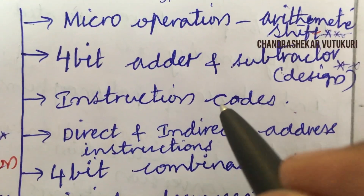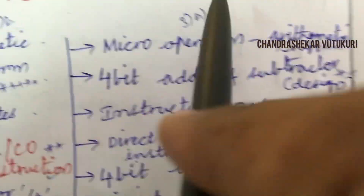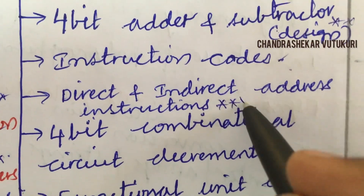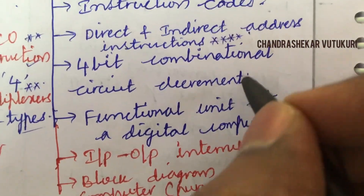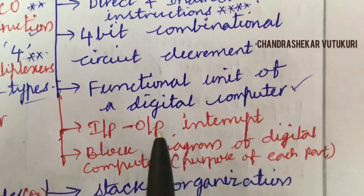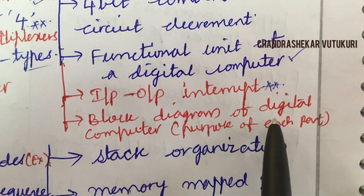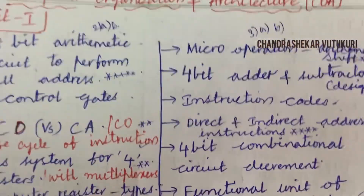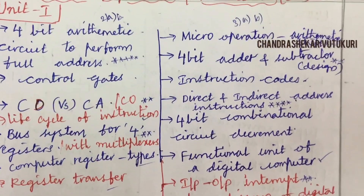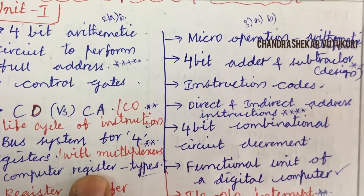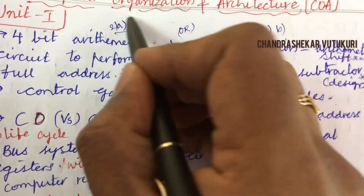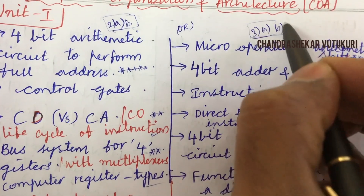Instruction codes and direct and indirect address instructions are the top questions for this time. A 4-bit combinational circuit decrement, functional unit of a digital computer, and input-output interrupt may be short questions. The block diagram of a digital computer and the purpose of each part can be expected in 3A and 3B. Note that direct 10-mark questions are not expected; it is a combination split of 5+5 marks. You must be thorough with the complete unit since it is an OR option — you attempt either 2A/B 100% or 3A/B only.